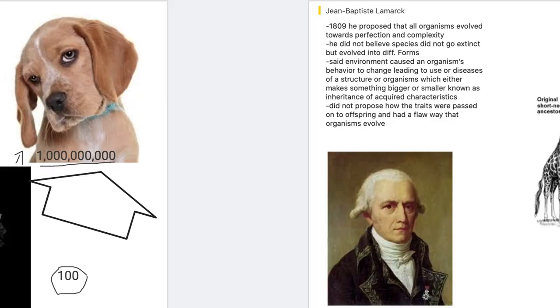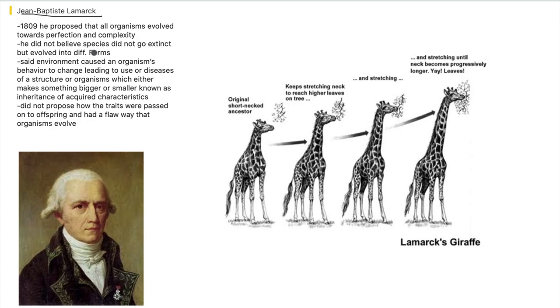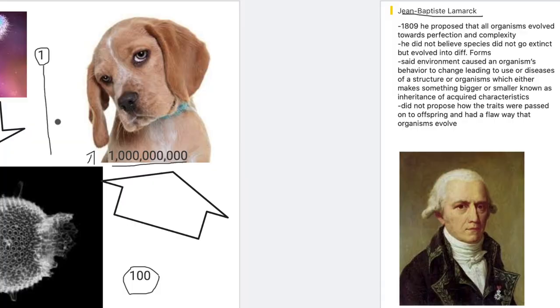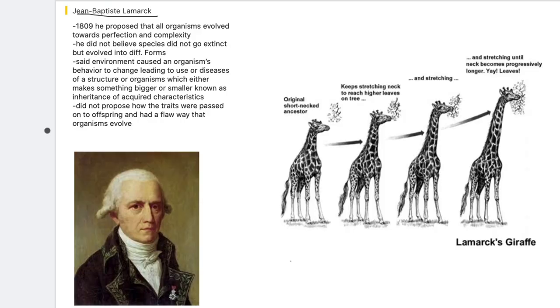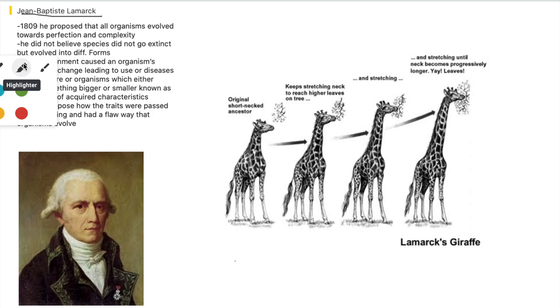The final person we're going to talk about today is Jean-Baptiste Lamarck. In 1809, he proposed that all organisms evolved towards perfection and complexity. This is similar to Erasmus Darwin's idea, that they evolved more complex. But he adds the notable thing right here where he says towards perfection.